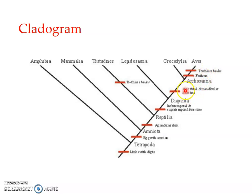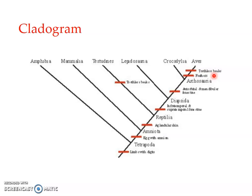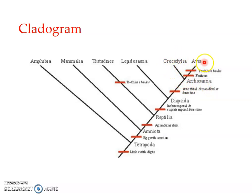Among the apomorphic characters, some characters may be unique to a particular taxon. For example, toothless beaks and feathers, even though they are apomorphic, are unique to Aves — so these are known as autapomorphic characters. The presence of mandibular fenestra, however, was found in the ancestor Archosauria, and from Archosauria two groups arose, and this character is found in both groups. So this is an apomorphic character shared by some of the taxa, and this shared derived character is what is referred to as a synapomorphic character.